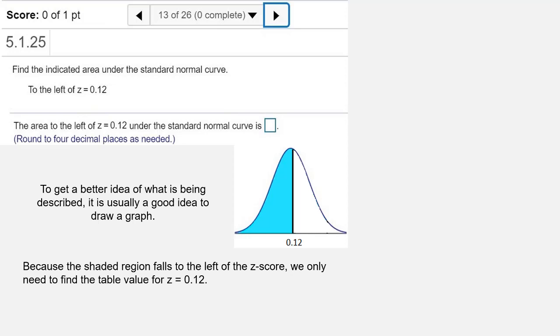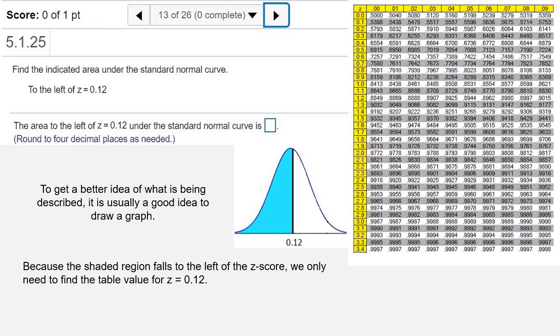We need the positive side of the standard normal distribution table because our z-score is positive. If z equals 0.12, then the area is going to equal whatever that table value is.